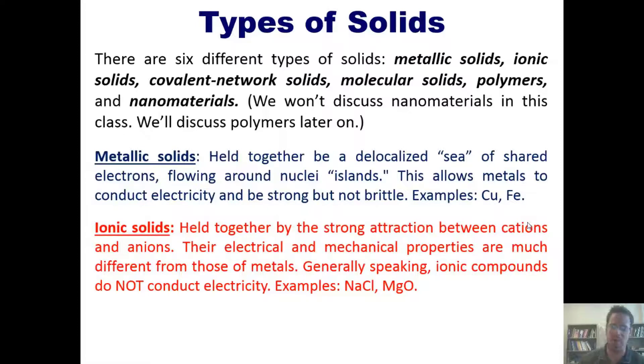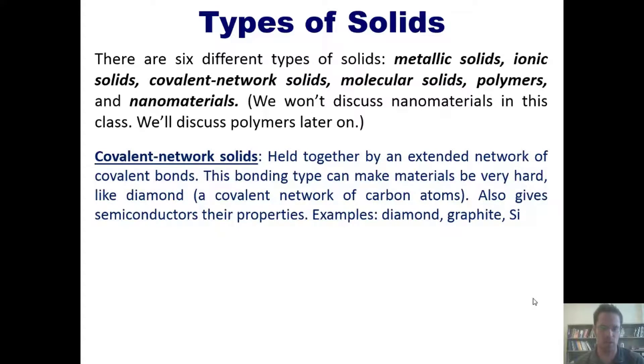These contrast with covalent-network solids, which are held together by an extended network of covalent bonds, not metallic or ionic bonds. This bonding type can make materials very hard, such as diamond, which is a covalent network of carbon atoms. It also gives semiconductors their properties. Examples include diamond, graphite, and silicon.